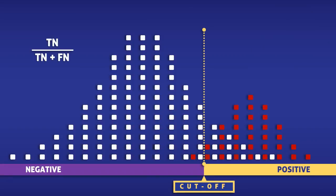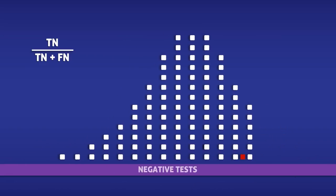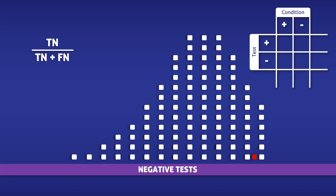Now let's calculate the negative predictive value. Since it only takes into consideration negative tests, we are going to focus on the squares to the left of the yellow line. When calculating the negative predictive value, we only need to use the bottom row. This row is used for people who tested negative. In the left box, we have the false negatives; in the middle box, the true negatives; and on the right, the total number of negative tests.